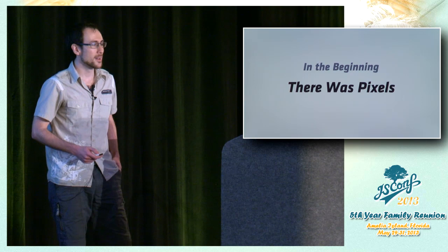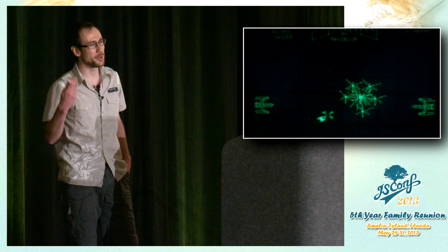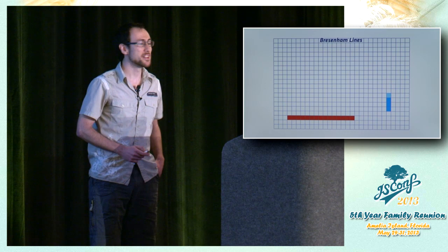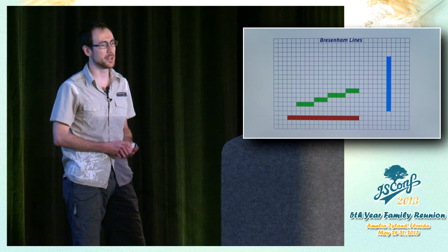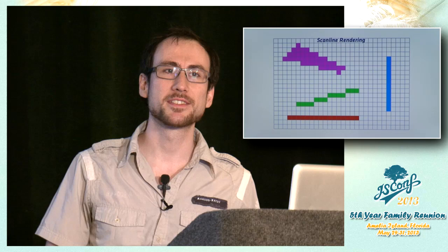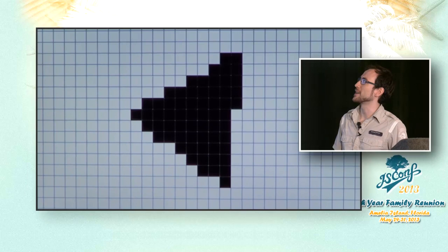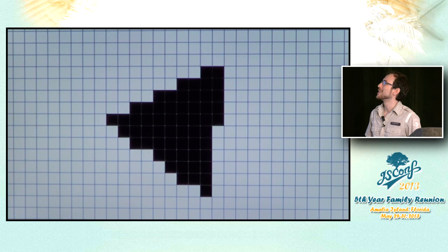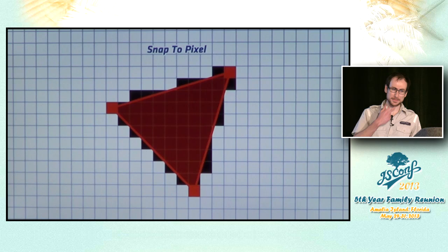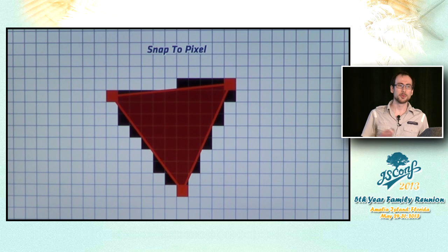In the beginning there were pixels. There was something called Bresenham lines, and using a simple for loop you could color in pixels and draw lines. Once we figured that out, we could draw solid shapes using scan line rendering to draw a triangle. Unfortunately, if you try to make a spinning triangle with this technique, it doesn't so much rotate as tick — because we're snapping to pixels. Everything is defined in terms of the pixel grid, which means we can only move the corners in discrete steps.